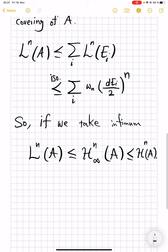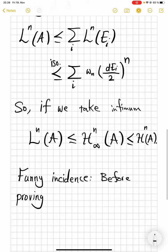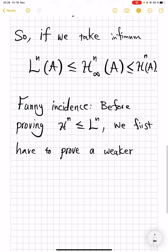So that establishes one direction of inequalities, so we have to now prove the reverse. So here's a funny incidence: before proving that H^n is less than or equal to L^n, we first have to prove, and this is the first time I see something like this, a weaker H^n less than or equal to some constant times L^n.